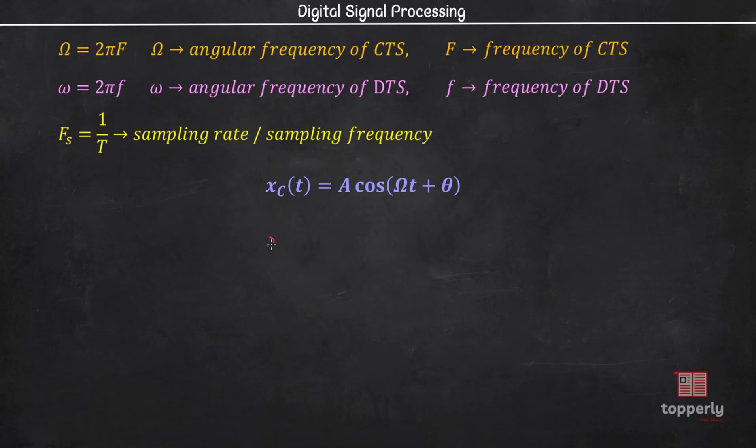This gives us X of n equal to Xc of n into capital T which is equal to A cos omega n into capital T plus theta, or equivalently we can write equal to A cos omega n by Fs plus theta, because Fs equal to 1 by T.